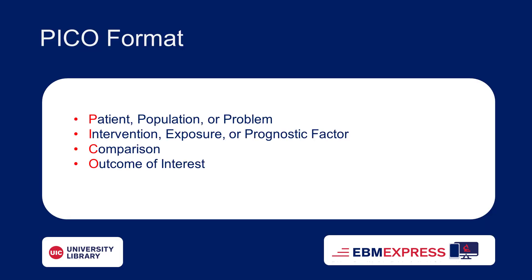Again, P stands for Patient, Population or Problem. I is for Intervention, Exposure or Prognostic Factor. C is for Comparison. And O stands for Outcome.